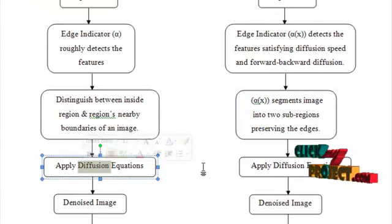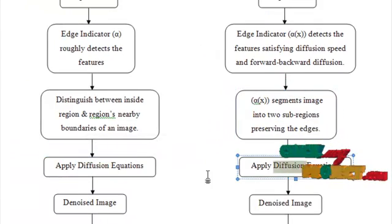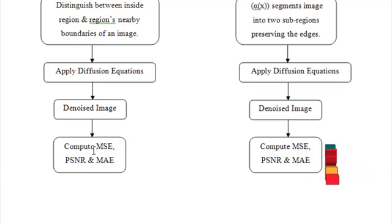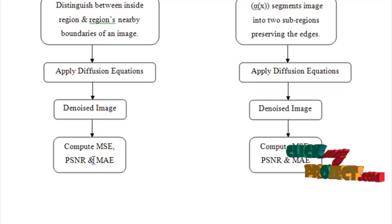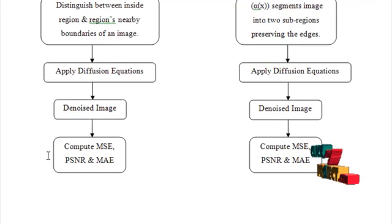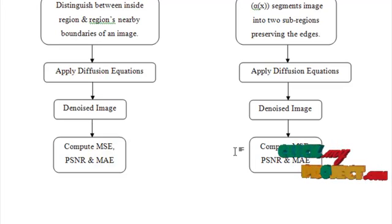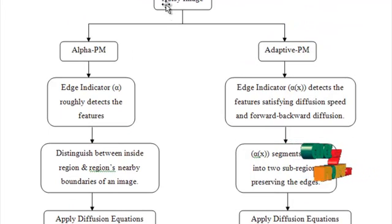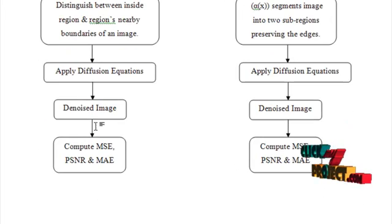This edge preservation is not concentrated on alpha PM. Applying diffusion equations will produce a denoised image. Calculate the quality metrics MSE, PSNR, and MAE for both types of methods. These parameters — MSE, PSNR, and MAE — are calculated for the original image and the denoised image.